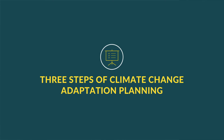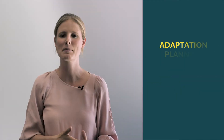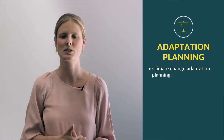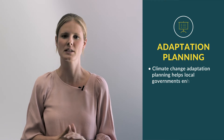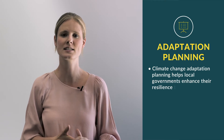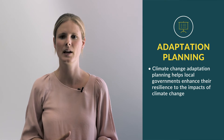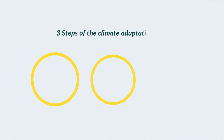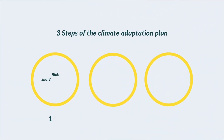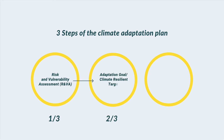Three steps of climate change adaptation planning. Climate change adaptation planning helps local governments enhance their resilience to the impacts of climate change. Planning can be broken down into three steps: developing a risk and vulnerability assessment, setting an adaptation goal, and developing a climate change adaptation action plan.